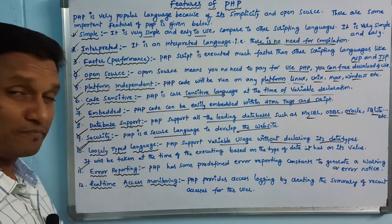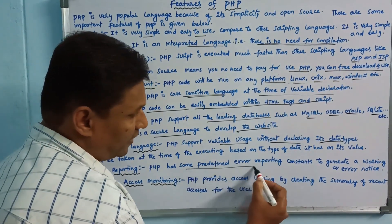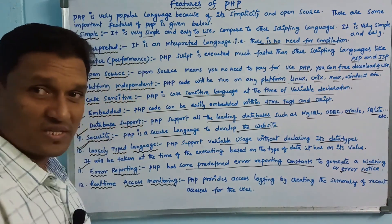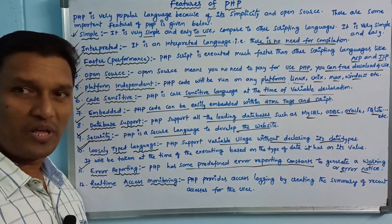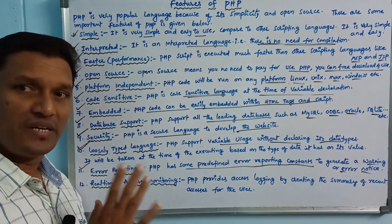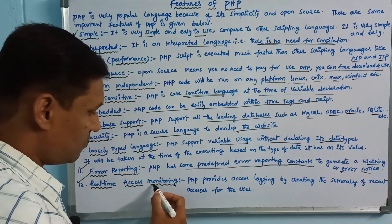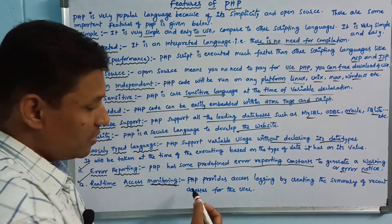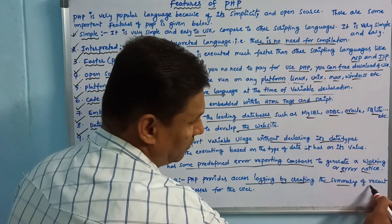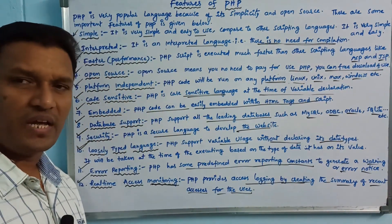Feature eleven: Error reporting. PHP has some pre-defined error reporting constants to generate a warning or error notice. Feature twelve: Real-time access monitoring. PHP provides access logging by creating a summary of recent access for the user.